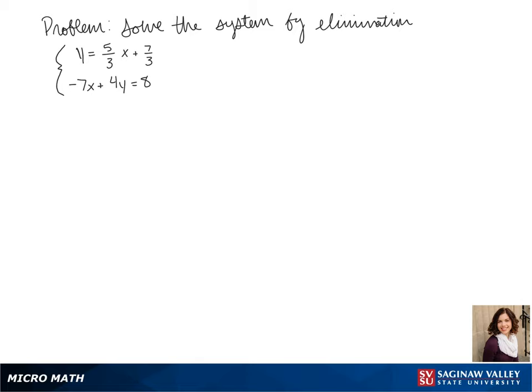Welcome to another day of algebra. Today we'll be solving the system by elimination. Our first equation is y equals 5 thirds x plus 7 thirds, and our second equation is negative 7x plus 4y equals 8.